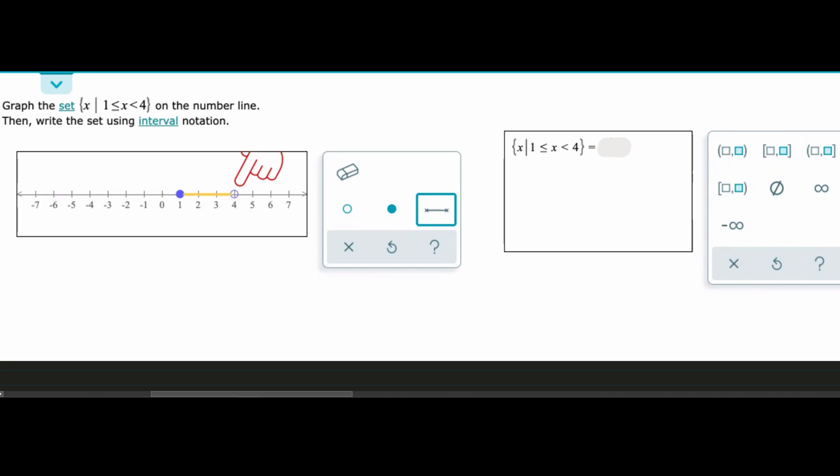And so when we write this out we know that we are going to have a bracket, we're going to have a comma, and then we're going to have a parenthesis. It goes up to but does not include the four, and then it goes to and touches the one, and we read this from left to right. So that is the answer and that is how we would go about looking at this problem.